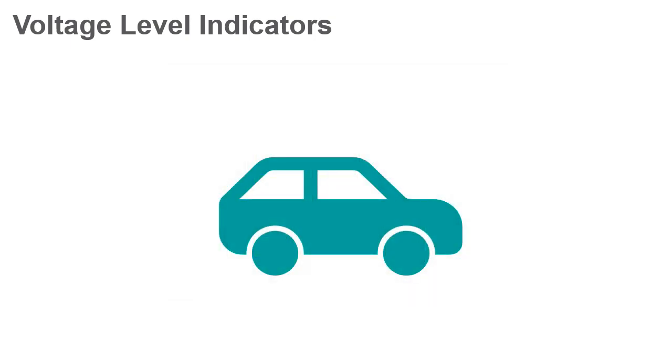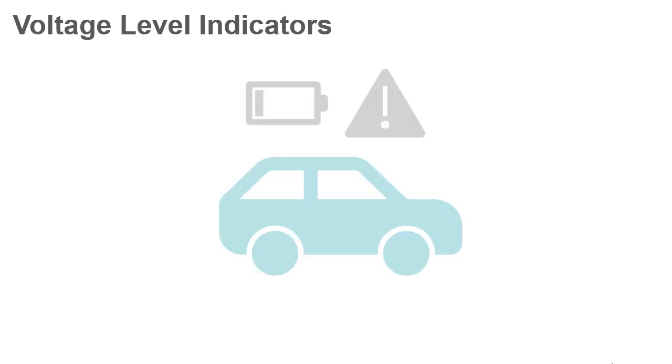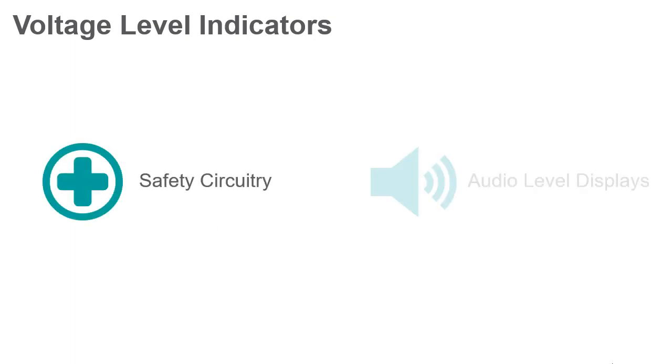Voltage levels are very important with regards to car batteries. If the voltage level is too low, this can create major problems for the car owner. Other applications of voltage indicators include safety circuitry and audio level displays. You can find many different configurations of voltage indicators using many different components such as Zener diodes and dedicated integrated circuits.